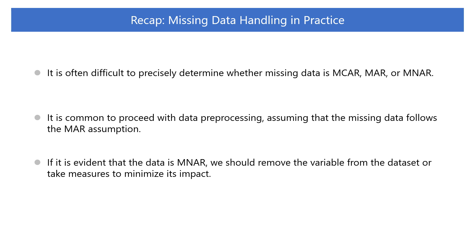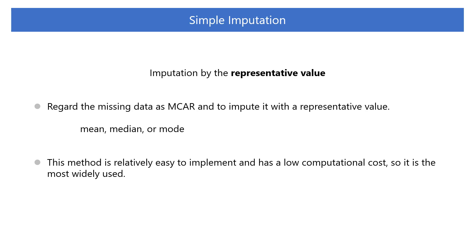If it is evident that the data is MNAR, we should remove the variable from the dataset or take measures to minimize its impact. As the first step, let's focus on simple imputation methods. The simplest method is to regard the missing data as MCAR and impute it with a representative value. This method is relatively easy to implement and has a low computational cost, so it is the most widely used.